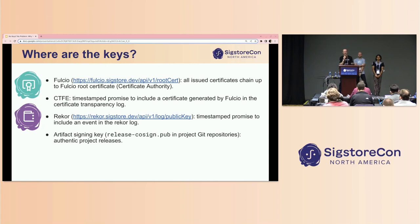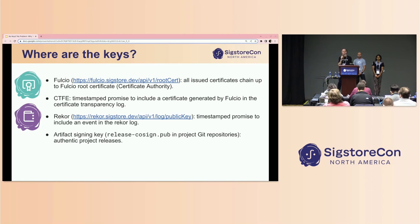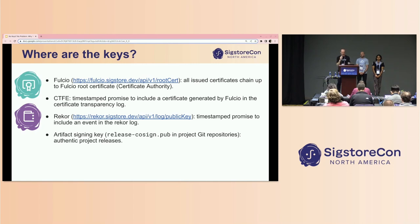Because this is an eventually consistent system, you're not going to be able to immediately query the system for the event you've just recorded. Similarly, Rekor issues signed promises that some metadata has been stored in the log there. And then we have the artifact signing keys, which give an indication of authenticity of a 6.0 project release. These are all super important keys that we want to make sure aren't put to malicious use.